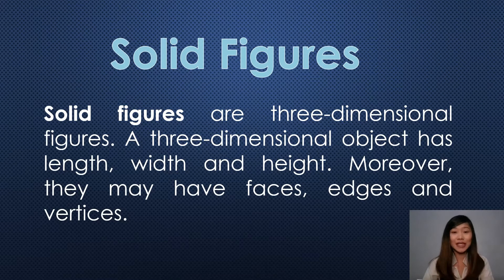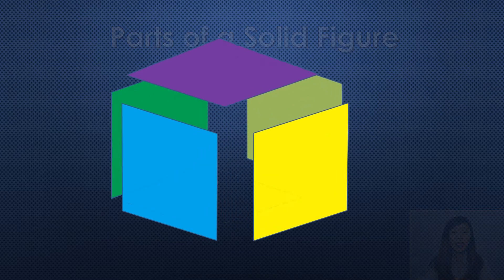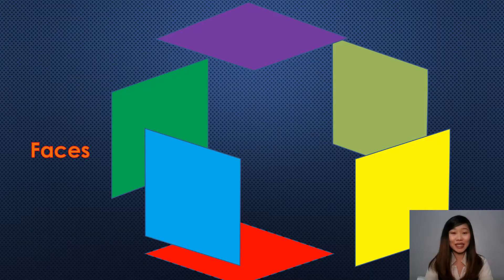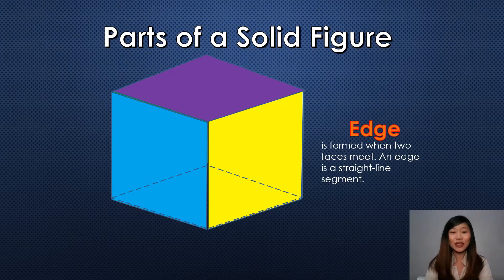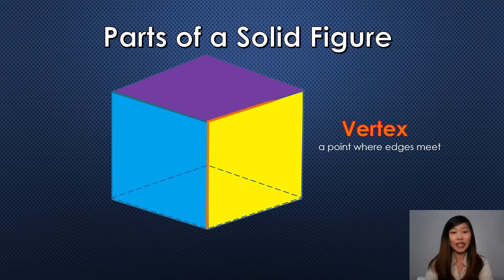Moreover, solid figures may have faces, edges, and vertices. Faces are a flat surface of a solid figure. An edge is formed when two faces meet — an edge is a straight line segment. Vertex is a point where edges meet.